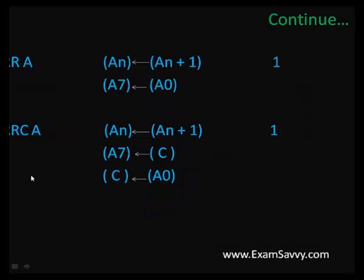The cycle repeats until completion. Same as rotate left, rotate right (RR) is performed — bit 0 is moved to bit 7. For RRC (rotate right with carry), bit 0 is moved to carry and that carry is moved to bit 7. That is rotate right with carry.